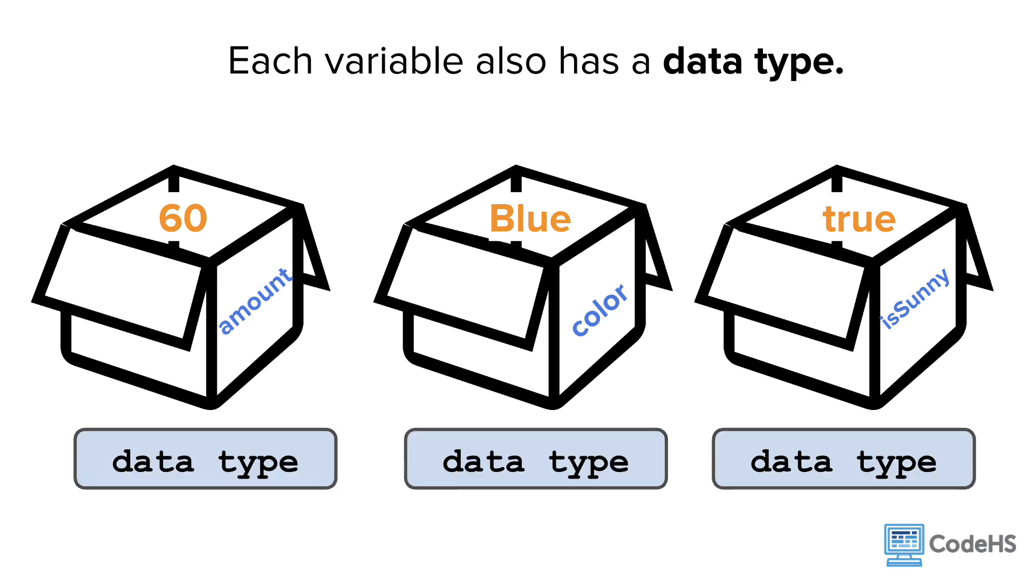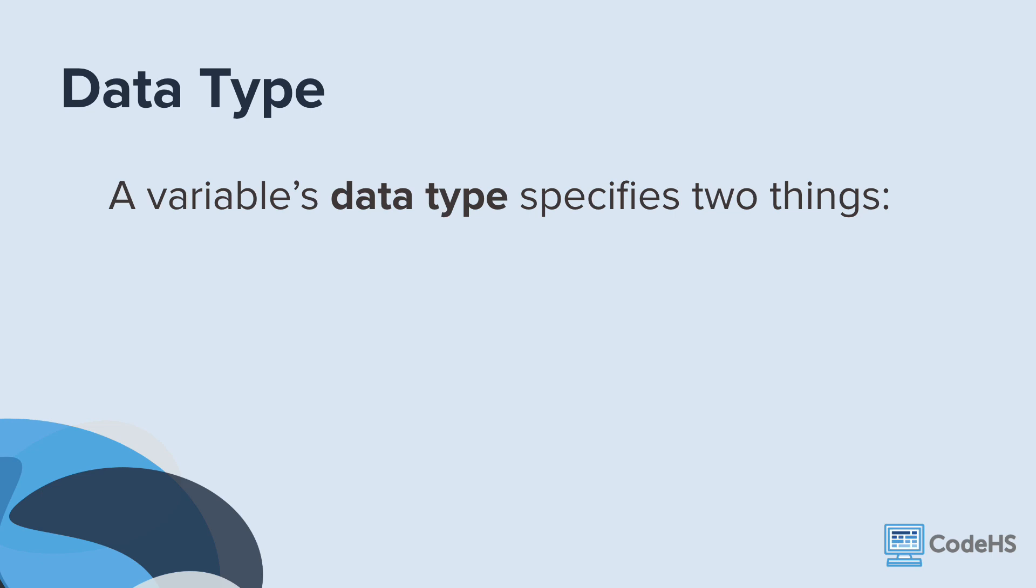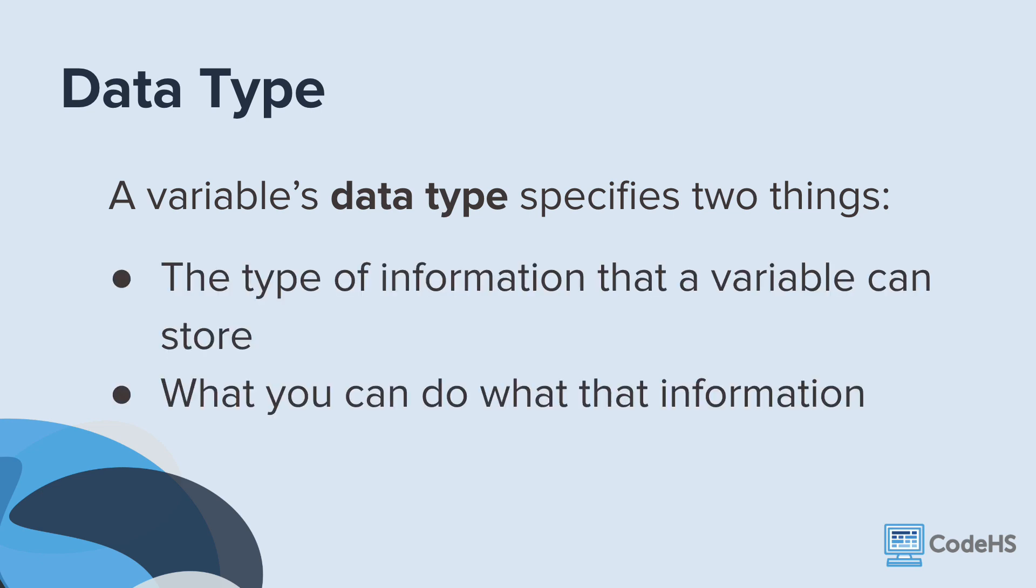Each variable also has a data type. A variable's data type specifies two things: the type of information that a variable can store, and what you can do with that information.